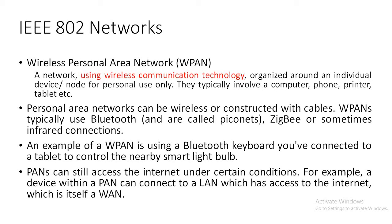Personal area networks may be wireless, using Bluetooth or ZigBee, or they may be constructed with cables. WPANs use Bluetooth, also called a piconet, ZigBee, or sometimes infrared connections. An example of a wireless personal area network is a Bluetooth keyboard connected to a nearby tablet to control a nearby smart light bulb. Personal area networks can still access the internet — for example, a device within a PAN can connect to a local area network which has access to the internet.